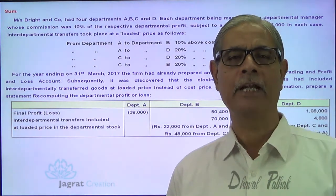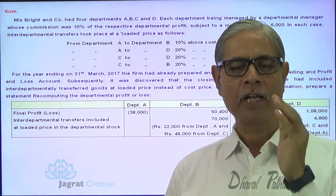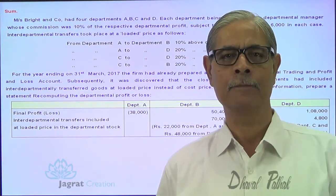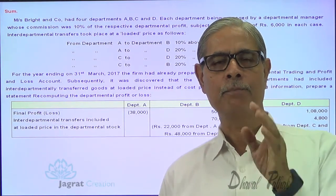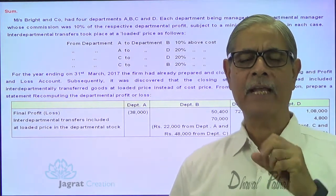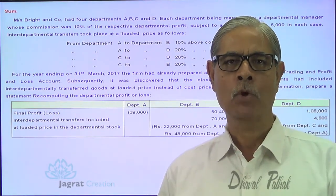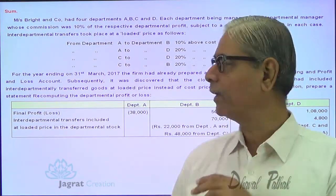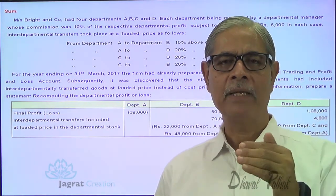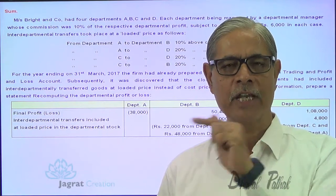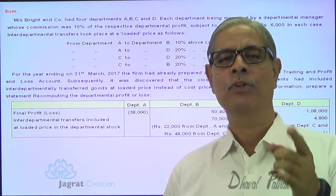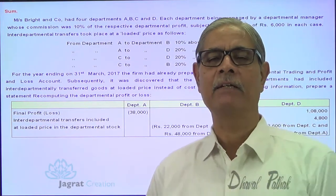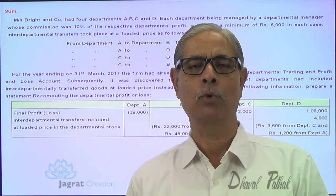Commission has already been paid without accounting for unrealized profit. So when commission was paid on a profit which requires correction, you have to add back the commission given and find out the profit before amendment of unrealized profit. Whatever profit is given in the sum, the commission given will be added back to get the profit before commission. Then I will give the effect of unrealized profit to get the true amended profit, apply commission on that, and get the net profit. This is the procedure I am going to follow.